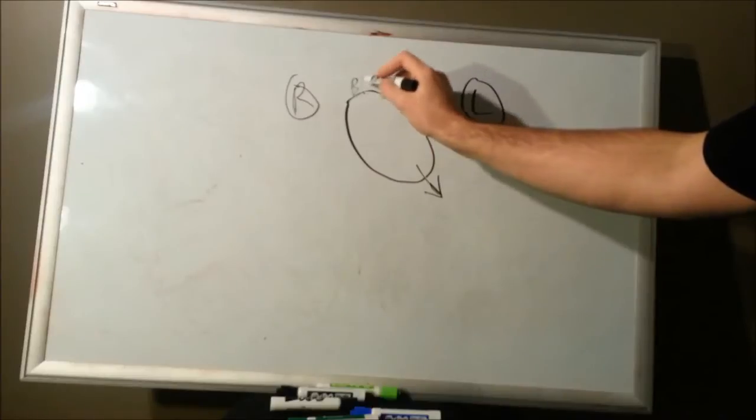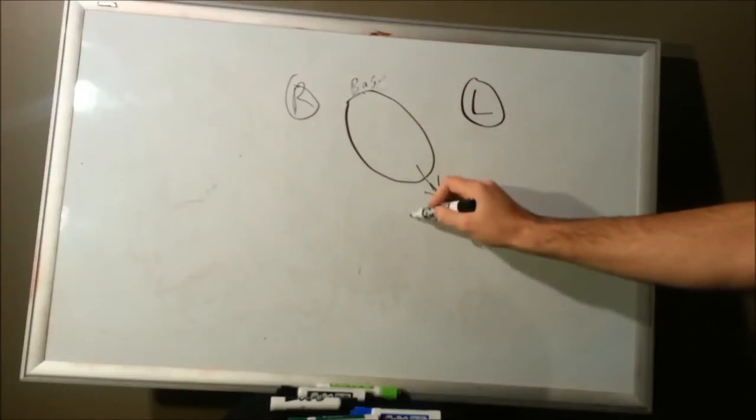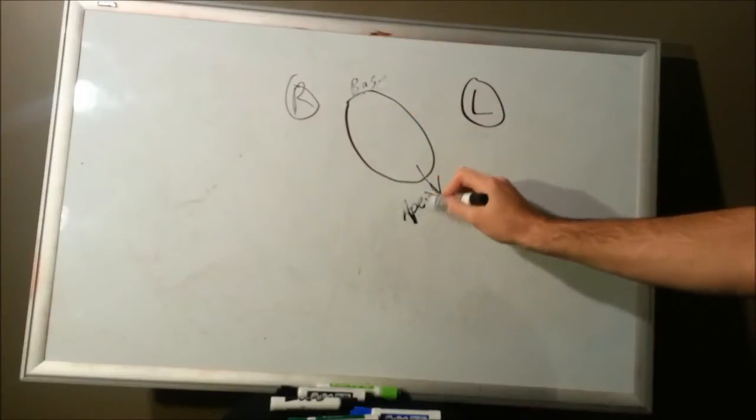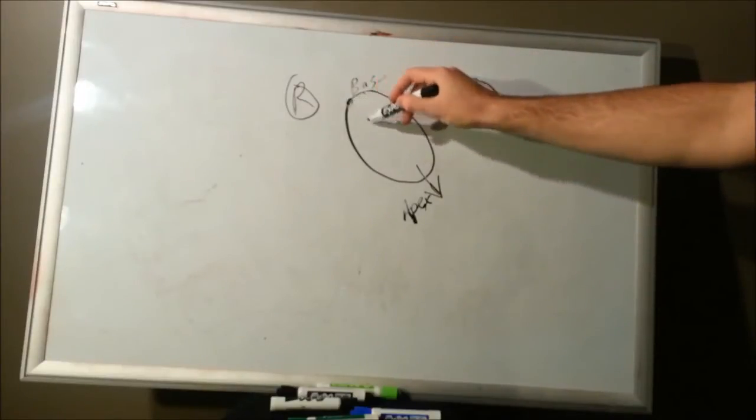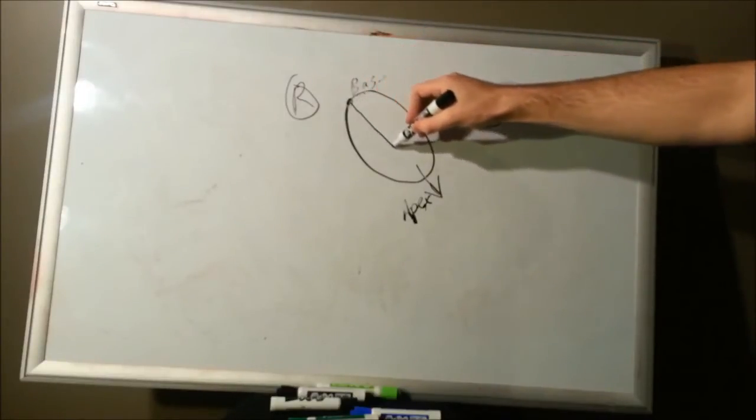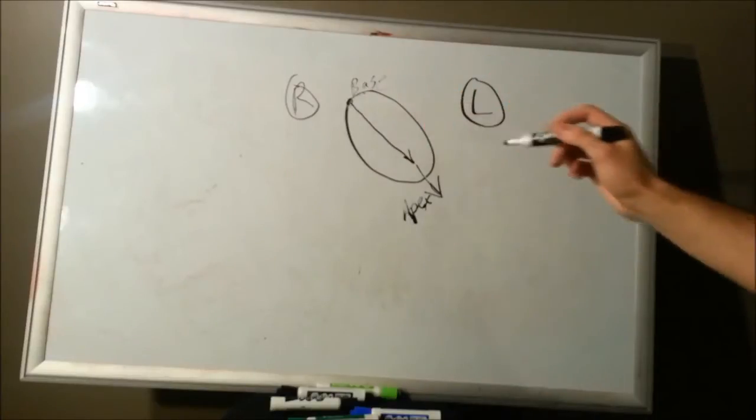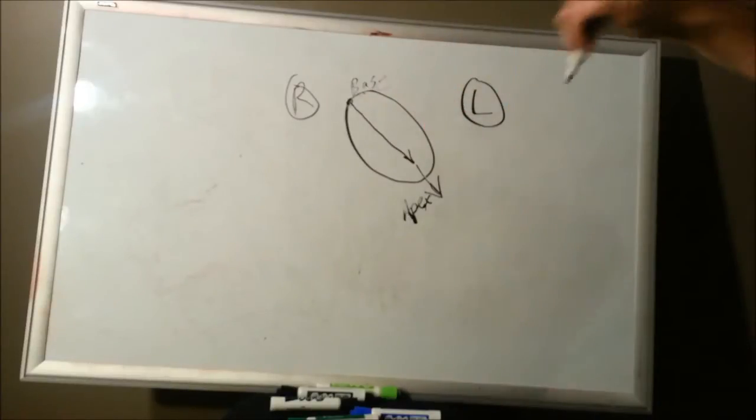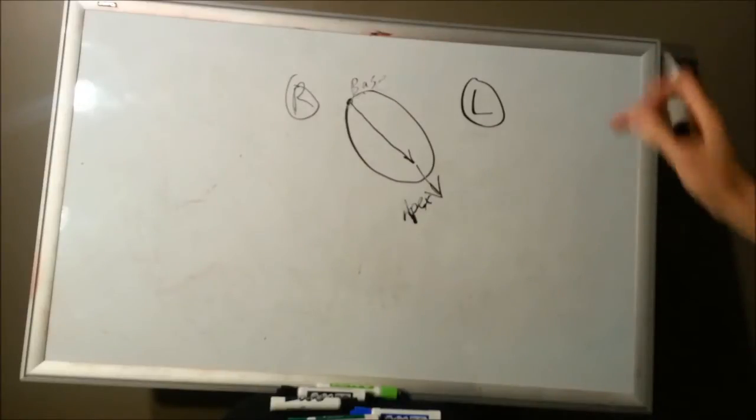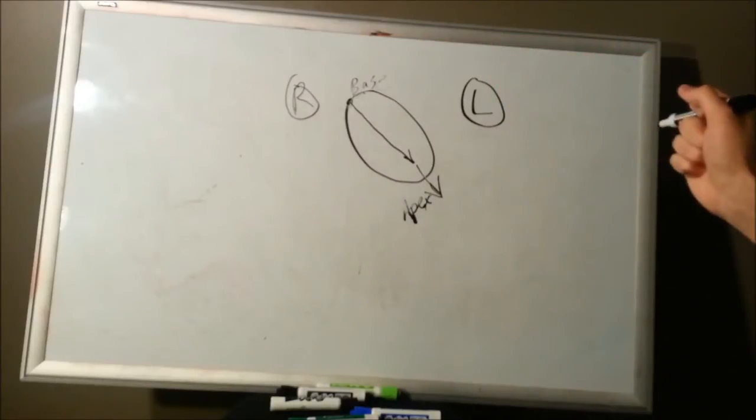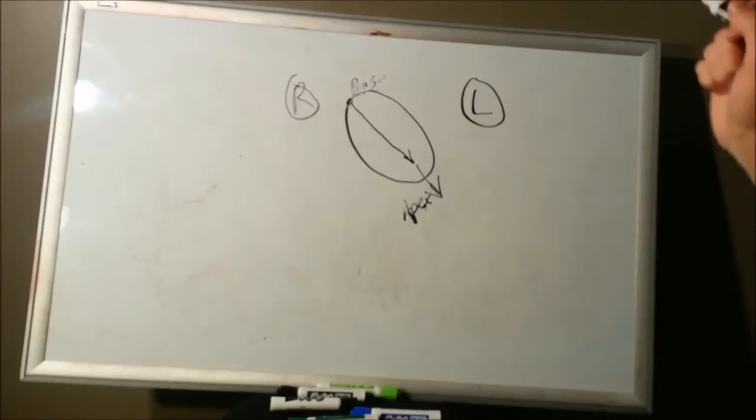Here's your base of the heart. Here's your apex of the heart. For the most part, your SA node is going to start the impulse, conduction's going to go down, depolarize in a vector force direction. So if you added up all of the action potentials causing muscle contractions, that's going to cause a vector force.